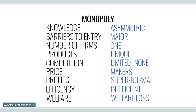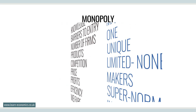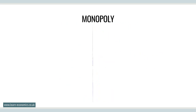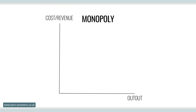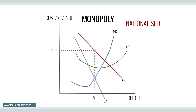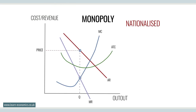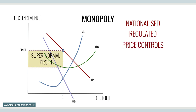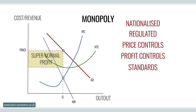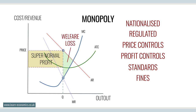Given the likelihood that monopolists may act against the interests of consumers and the national economy, they may be nationalized or tightly regulated through price controls, profit controls and special taxes, setting standards, fining anti-competitive practices, and establishing competition regulators, such as the Federal Trade Commission in the US and the Competition and Markets Authority in the UK.